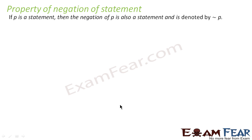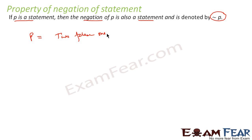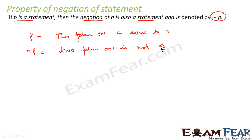Now let's look at the properties of negation. If p is a statement, then the negation of p is also a statement, denoted by tilde p (~p). For example, if p is '2 plus 1 is equal to 3', then the negation (~p) is '2 plus 1 is not equal to 3'. So p is a statement and ~p is also a statement — that is the first property.